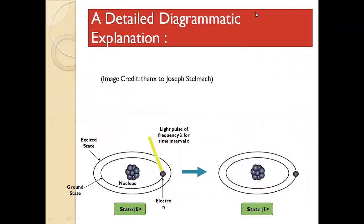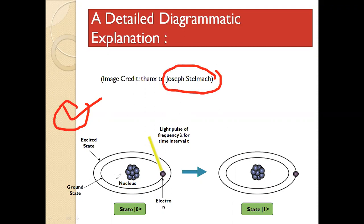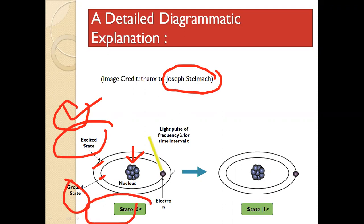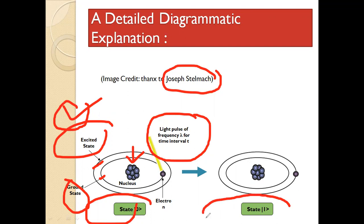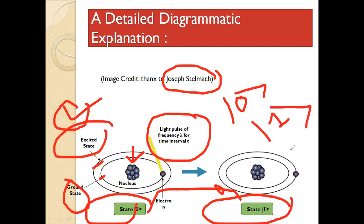For a more diagrammatic view, you can look at this diagram — credit goes to Joseph Stelmach. Here you can see the nucleus, the excited state, and the ground state. Starting from state |0⟩ (ground state), when an electron receives a light pulse of frequency lambda for time interval t, the state changes from the ground state to the excited state. I hope this diagram is now clear to you.